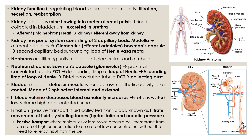The first process is filtration, which occurs by passive transport. Fluid is collected from blood and is known as filtrate, and the movement of that fluid happens by Starling forces — hydrostatic and oncotic pressure. Blood goes through a nephron, filtration happens, filtrate is formed, and exchange occurs.